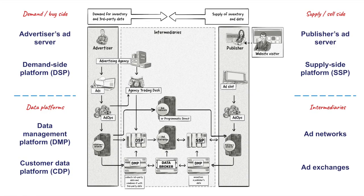Let's start with the advertiser's side, also known as the demand or buy side, as advertisers are the ones wanting to buy available ad space. Most advertisers would use an ad server, also known as a third-party ad server. This ad tech platform is responsible for making decisions about what ads to show on a website, serving those ads, connecting with other ad tech platforms such as demand-side platforms to purchase inventory, and collecting data such as impressions and clicks for reporting.